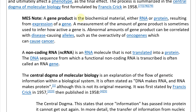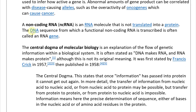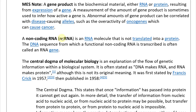A gene product is the biochemical material, either RNA or protein, resulting from expression of a gene from the DNA. A measurement of the amount of gene product is sometimes used to infer how active a gene is. Abnormal amounts of gene product can be correlated with disease-causing alleles, such as the overactivity of oncogenes, which can cause cancer. A non-coding RNA (ncRNA) is an RNA molecule that is not translated into a protein.